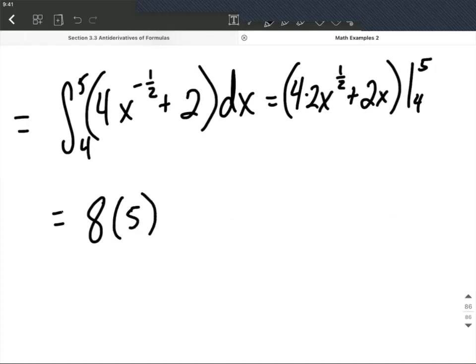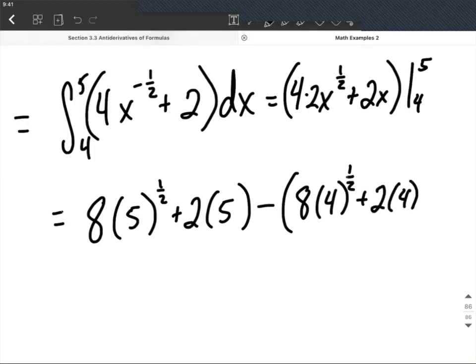I'm going to put 5 to the 1/2 power plus 2. I'm going to plug in the 5 for the x on the second one as well. Minus, now big set of parentheses, again 4 times 2 is 8, and now I'm going to evaluate the 4 into each of the x's, so 4 to the 1/2 power plus 2 times 4 for that other x.